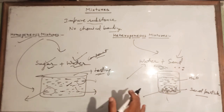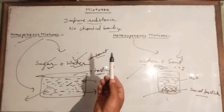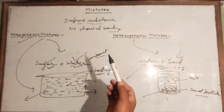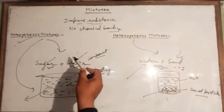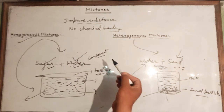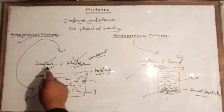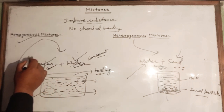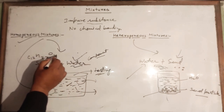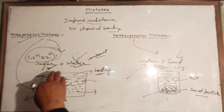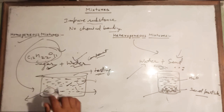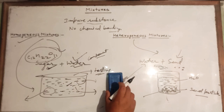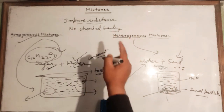In this way we can define mixtures: mixtures are impure substances formed by mixing two or more pure substances like elements and compounds — with no chemical bonding between them. For example, sugar is a compound whose formula is C₁₂H₂₂O₁₁.